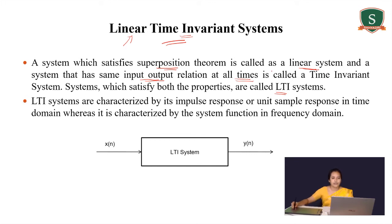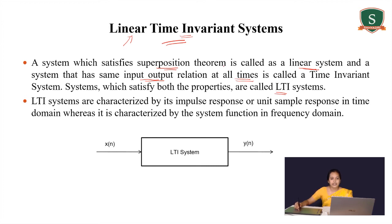Such systems are known as linear systems. Now, for a time invariant system: if I shift an input x(n) by some amount, it should produce the same amount of shift at the output as well. Such systems are known as time invariant systems, and a system which satisfies both the properties of linear and time invariant is known as a linear time invariant system.